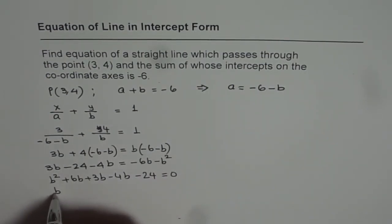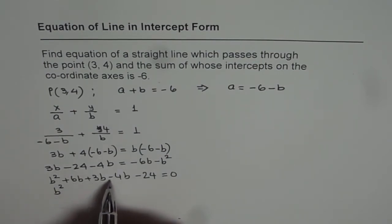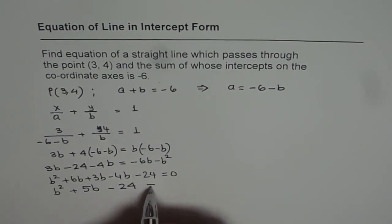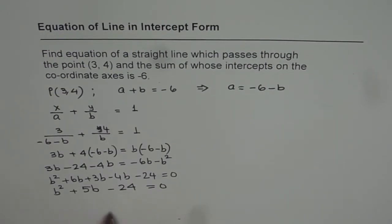Let's combine the terms: b². 6 plus 3 is 9. 9 minus 4 is 5. So we get b² + 5b - 24 = 0. This is a quadratic equation. We can factor. We need 2 numbers whose product is -24 and sum is 5.